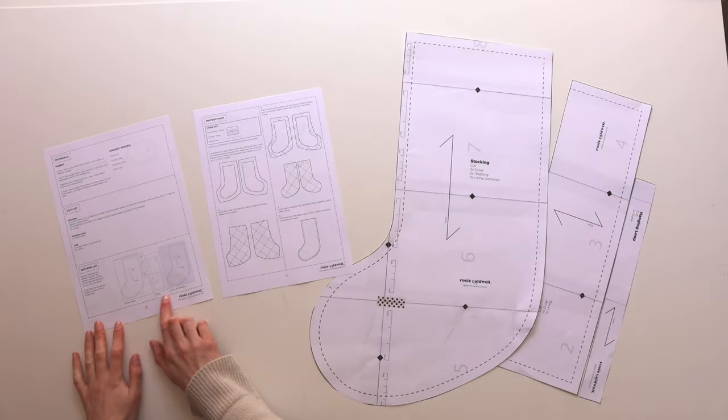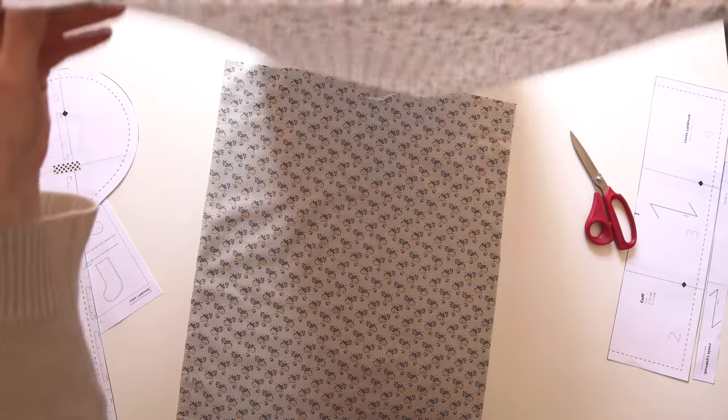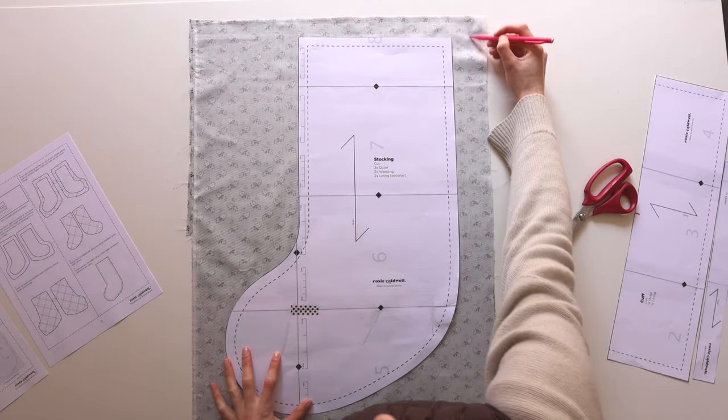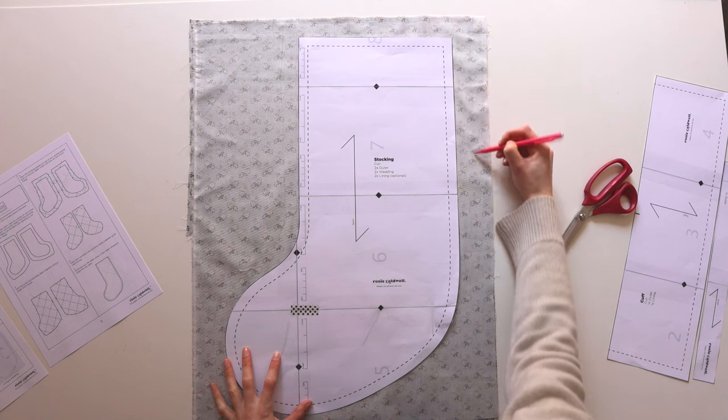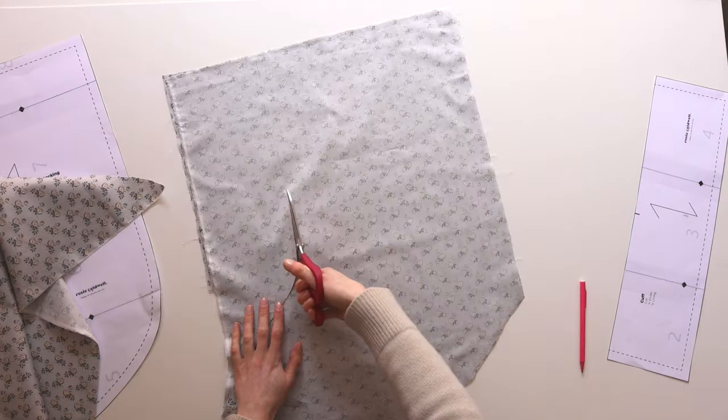For the outer fabric I like to use a printed cotton and you need to make sure you're cutting the fabric with a mirror image. So make sure the good sides of your fabric are facing each other when you're cutting out the stocking. Because I'm quilting this fabric I've added some extra seam allowance around the edge.